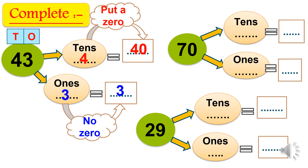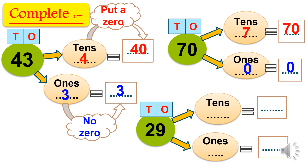We have number seventy. In tens place: number seven, its value equals seventy — in tens we put a zero. In ones: zero, its value equals zero. The last one: twenty-nine. In tens: two, its value equals twenty — in tenths we put a zero. In ones: nine, its value equals nine — no zero in ones.